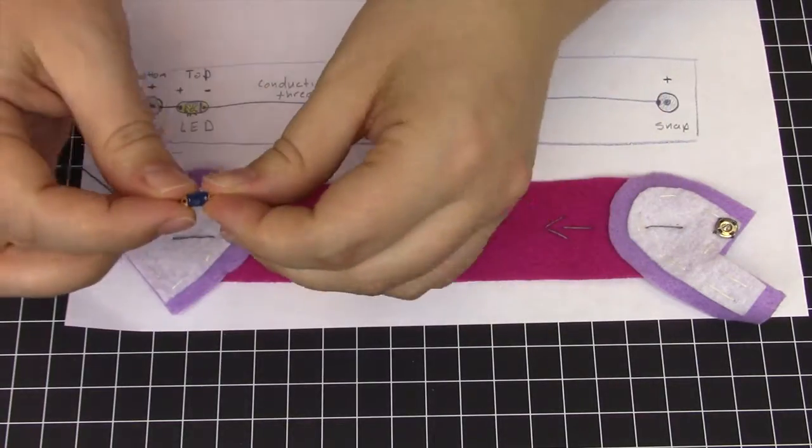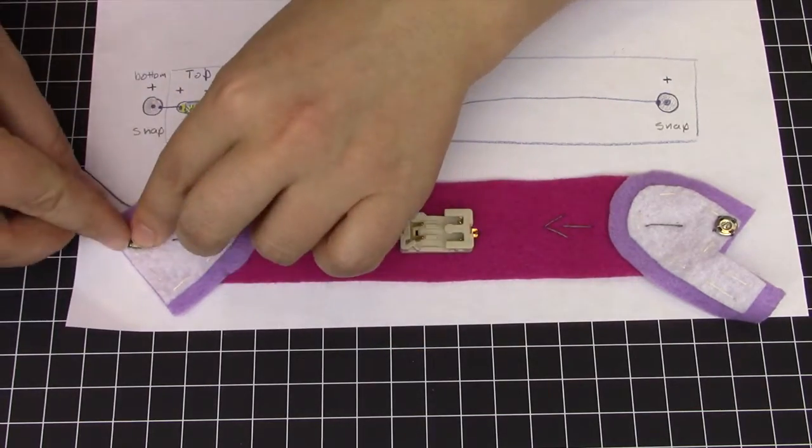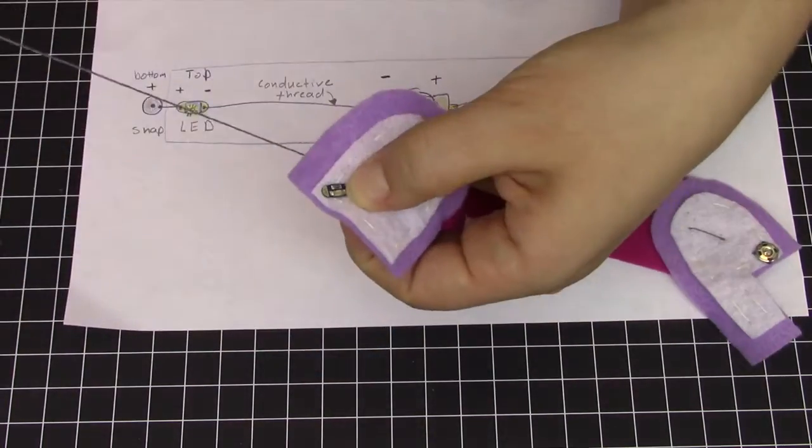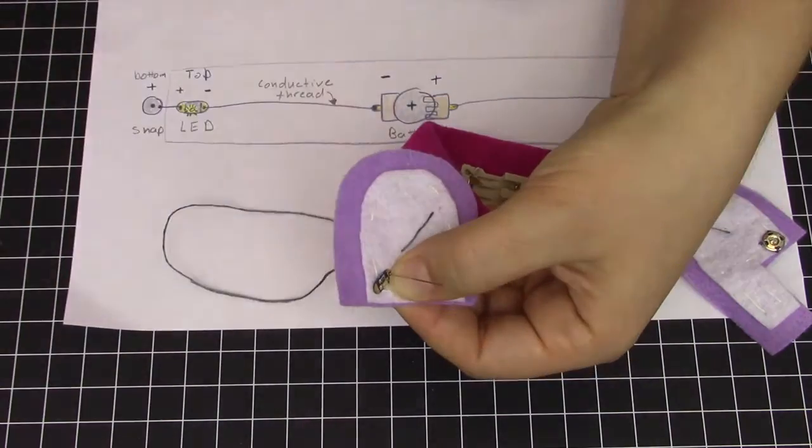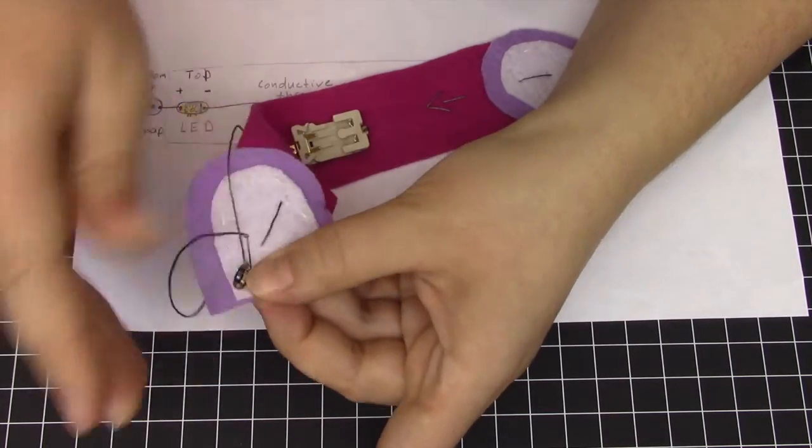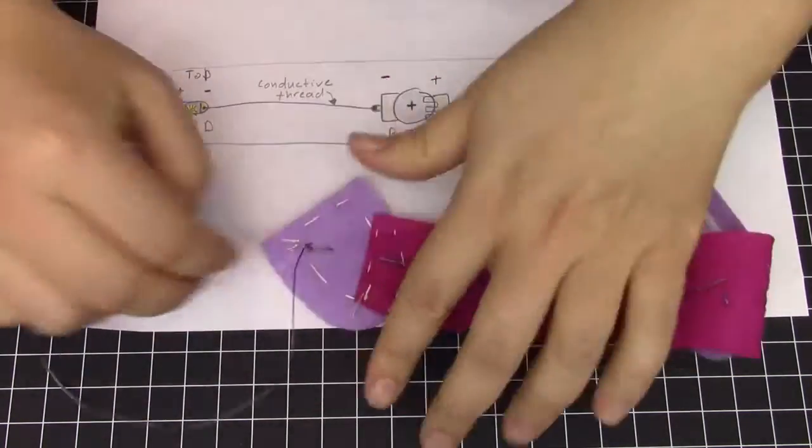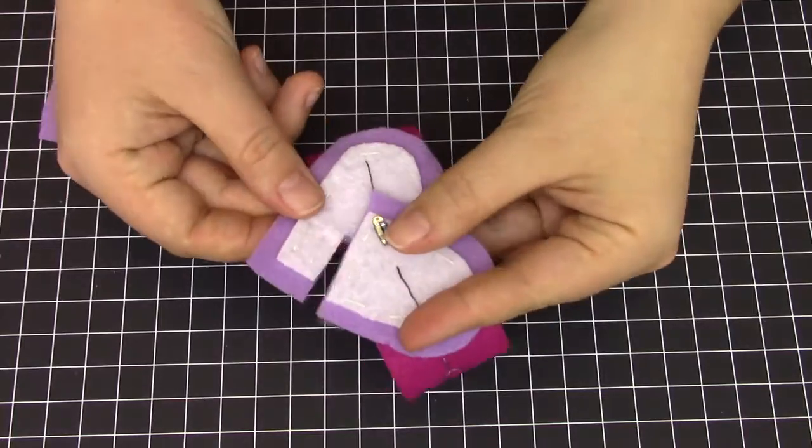Next, find your LED, and notice which end is labeled positive and negative on the back side. Make sure that the negative side is what we are connecting to the negative battery terminal. Use the remainder of your conductive thread, and loop through the hole and around it two or three times, to make a good electrical connection. Then create a knot on the back side, as previously shown.